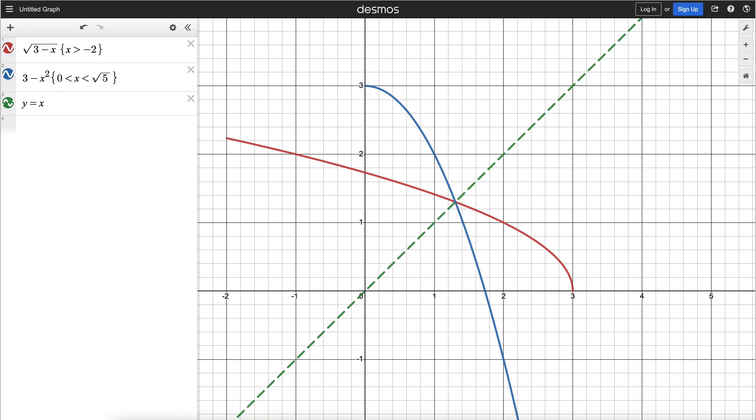What I've done here in Desmos is graph the red one—our original function, square root of 3 minus x—and I've restricted the domain using these curly brackets. That's how you restrict domains in Desmos. x greater than negative 2 gives us the red graph. Then in blue, there's our inverse, and I've restricted the domain between 0 and square root of 5. That's what we determined.